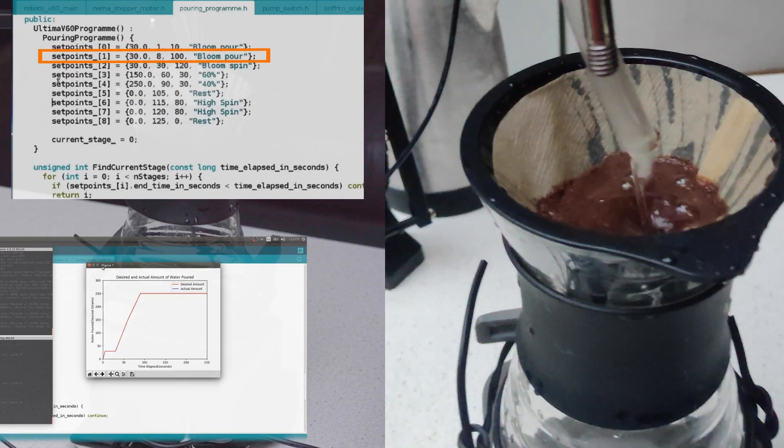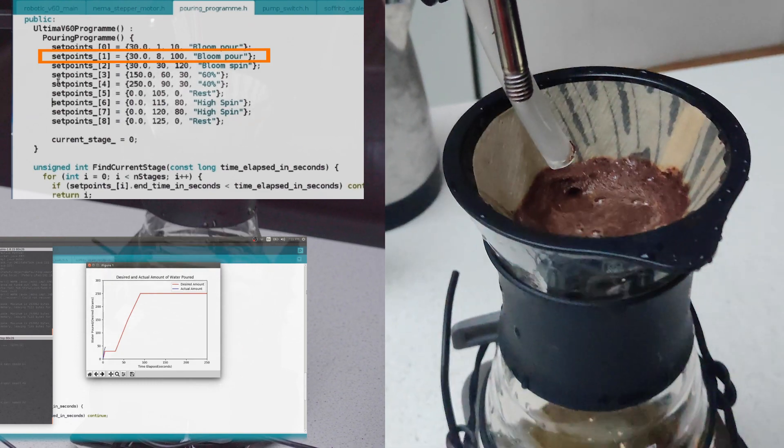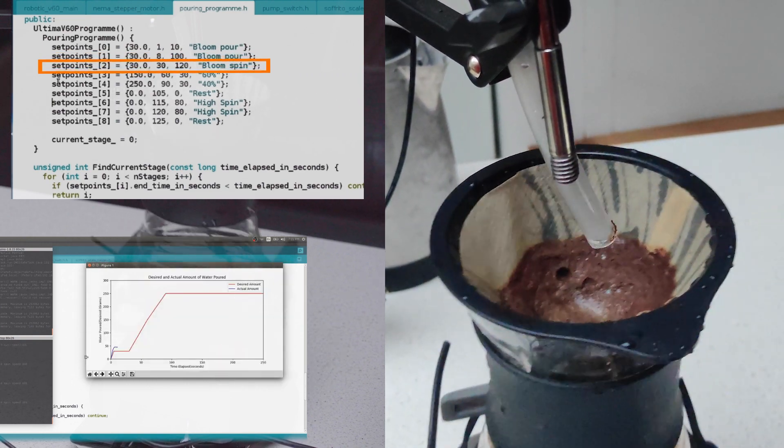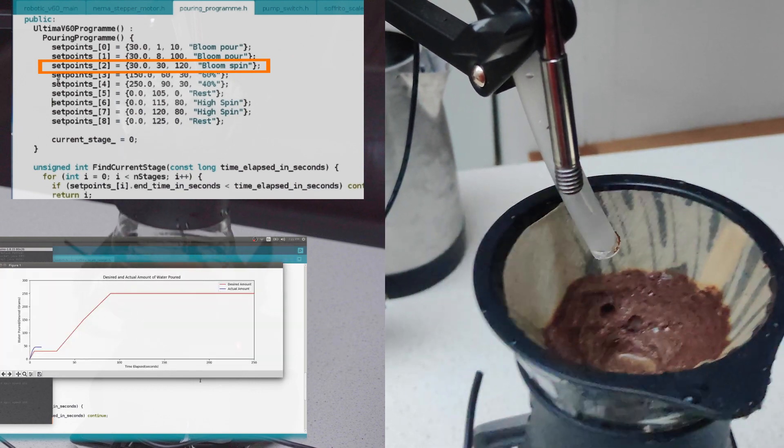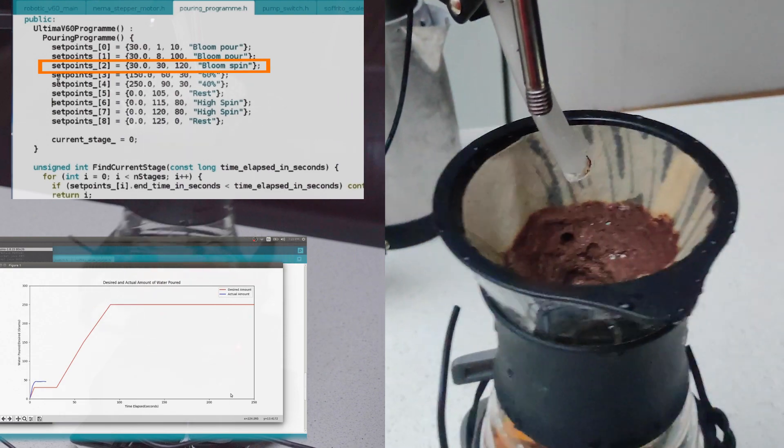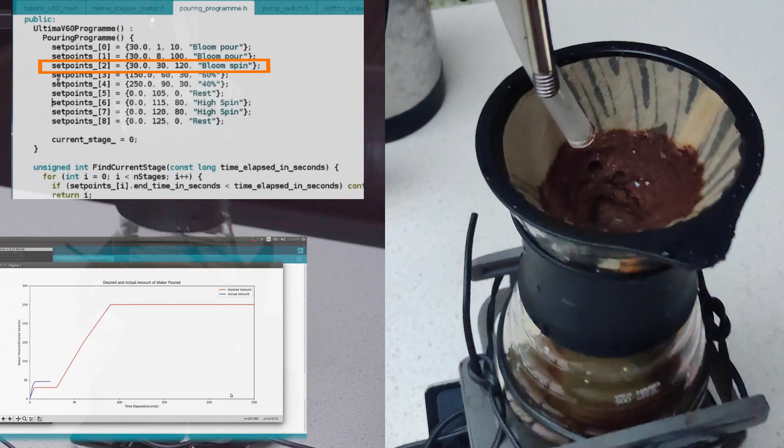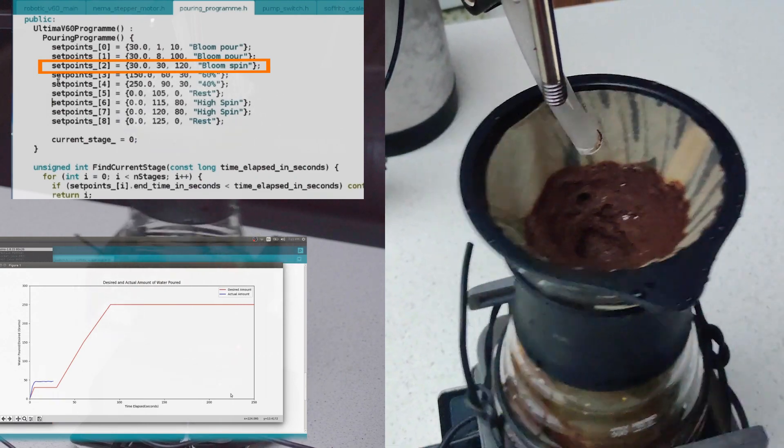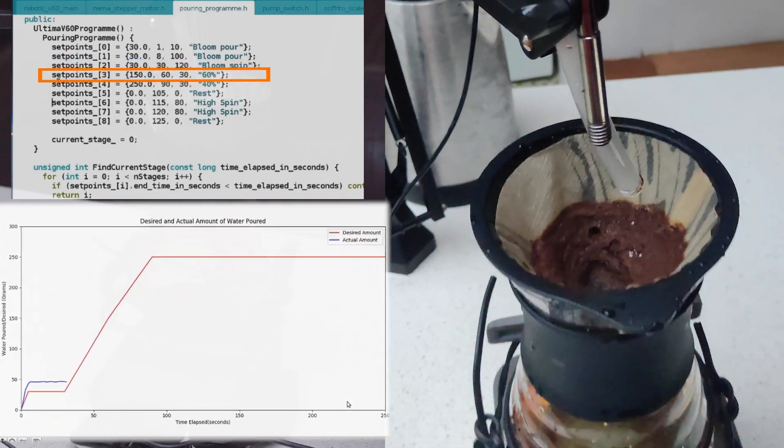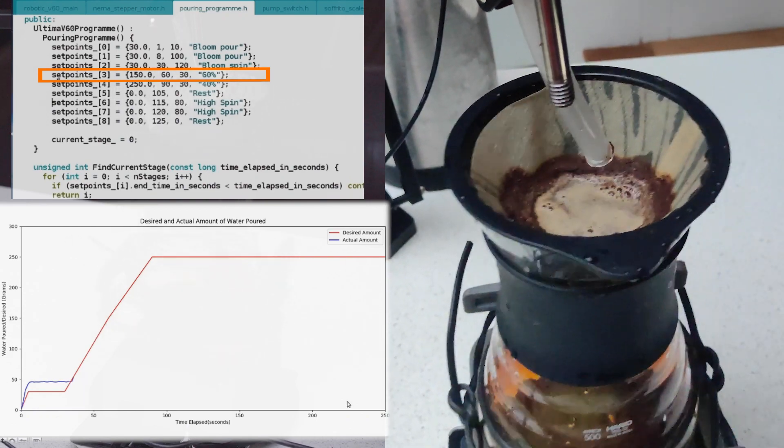To the top left here, we see the current phase that the coffee robot is in. And we'll begin with the bloom phase where for every gram of coffee grounds we aim to pour 2 grams of water. Here I'm using 15 grams of coffee grounds so as we see in the plot to the bottom left we're aiming to pour 30 grams of water. However, we've overshot this and we've already poured 45 grams of water. This is still within James's recommendation since he says we can pour up to 3 grams of water per gram of coffee used.